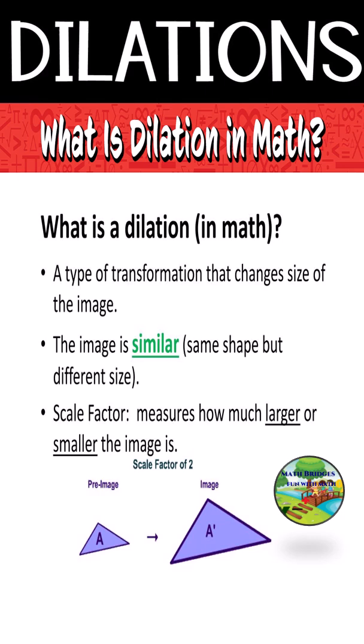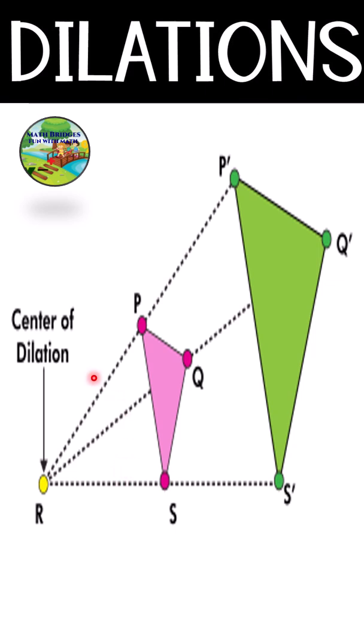If you observe this figure on a coordinate plane, R is the center and PQRS is the original image, and this is the extended one. Only the size has been changed, but not the shape. The center of dilation remains the same for every figure, whether small or large.